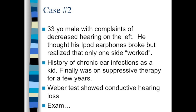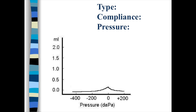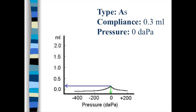Here's a new case: a 33-year-old male complains of decreased hearing on the left. He initially thought his jawbone earphones broke, but then realized the problem was the ear itself. He has a history of chronic ear infections as a child and was on suppressive therapy for a few years. Weber test shows a conductive hearing loss. On otoscopy, the bottom is scarred and the upper is retracted and covering bone. The tympanogram shows normal pressure but Type AS — implying stiff tympanic movement.